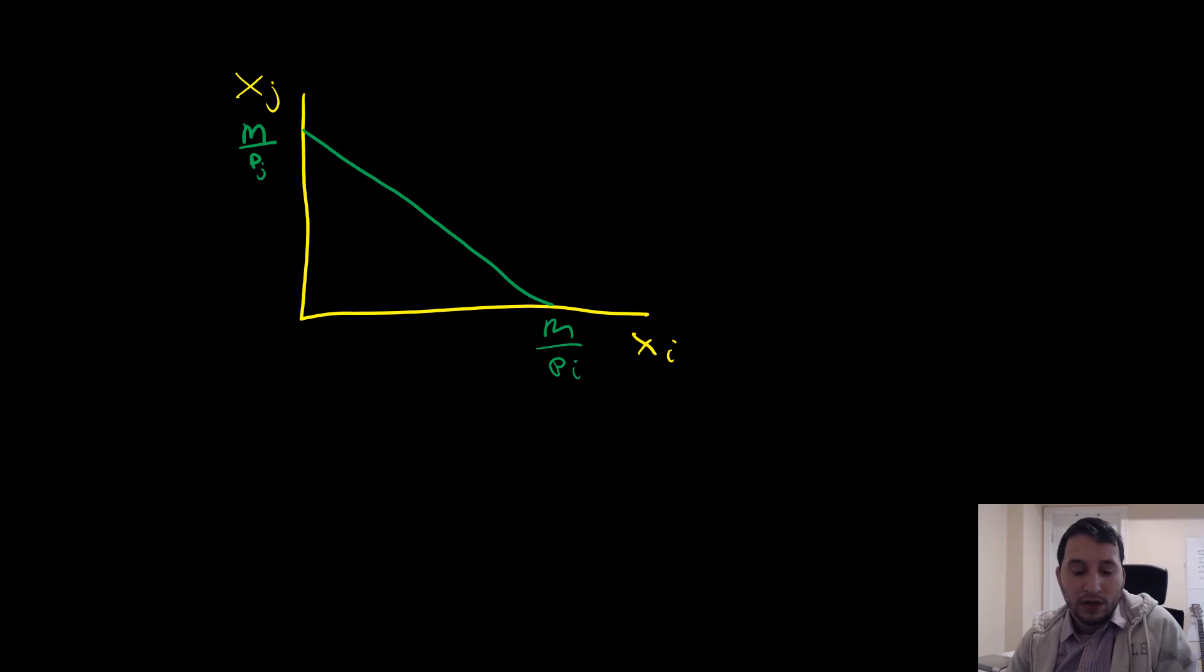Now, for some arbitrary preferences which are perfect substitutes, we can either have something like this where we have a corner solution right here, or if we have a different structure of preferences, we can have a corner solution up here. And if we have this case here, we have to lie directly on top of this case for every good i and good j.